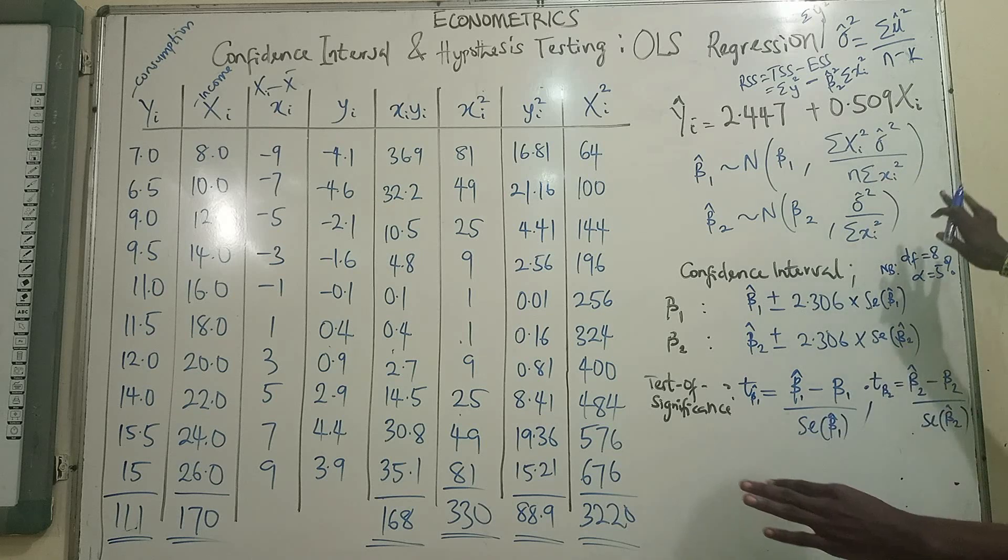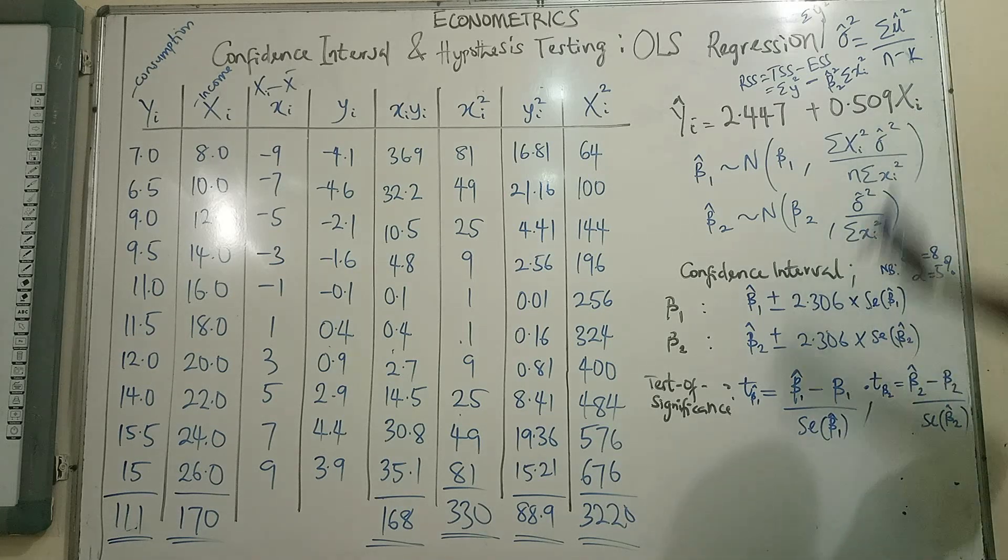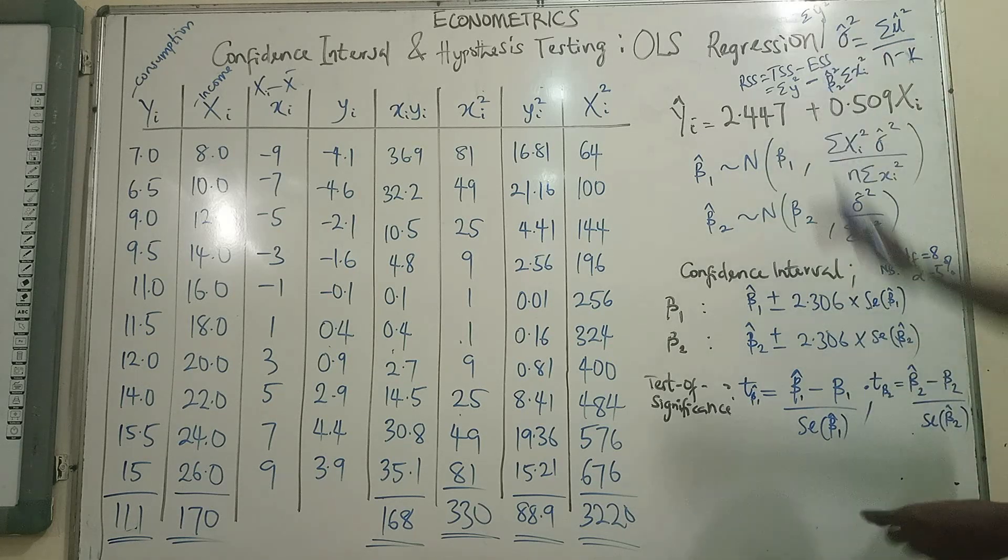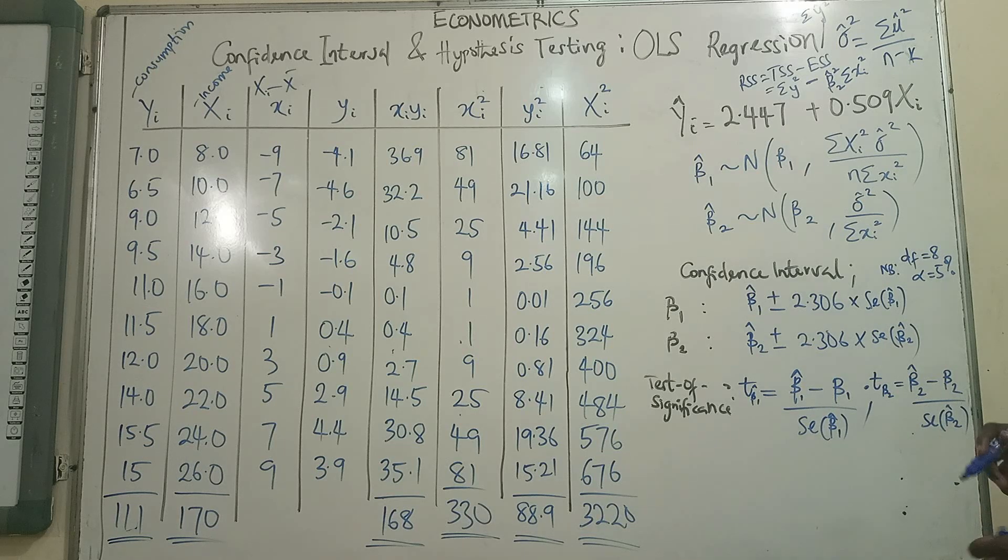This will give us the ESS. And so when we just subtract this from this, we get our RSS automatically and we can divide by 8. In this case, the degree of freedom is 10 minus 2, which is 8.